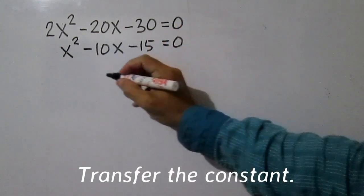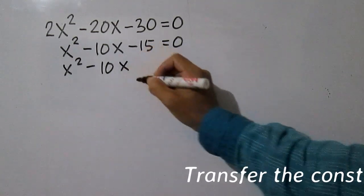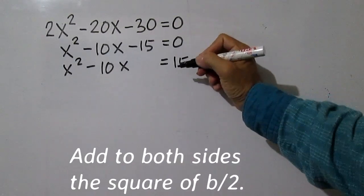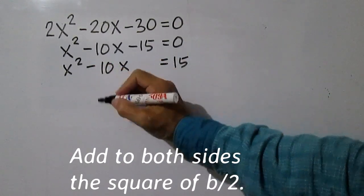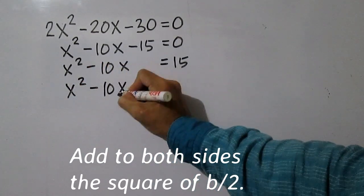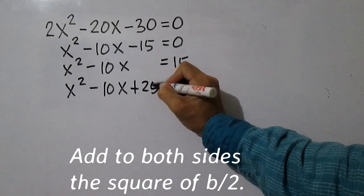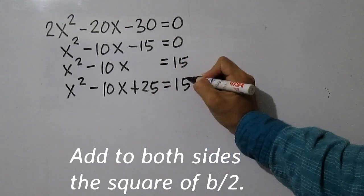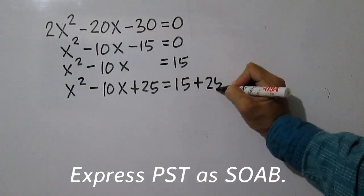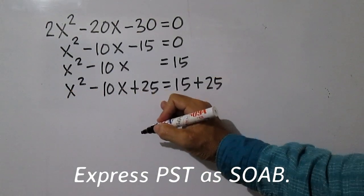Transfer 15 to the right side of the equation. Then add to both sides the square of one half of negative 10, which is 25. Express x squared minus 10x plus 25 as the square of a binomial.